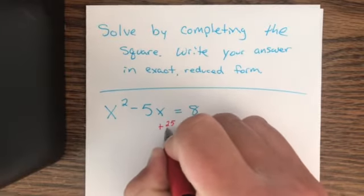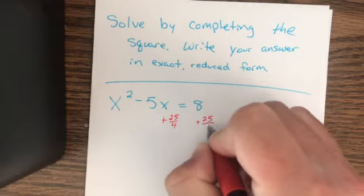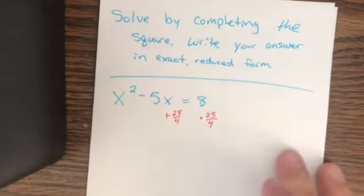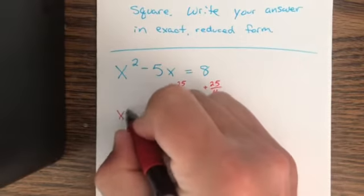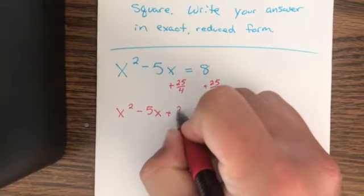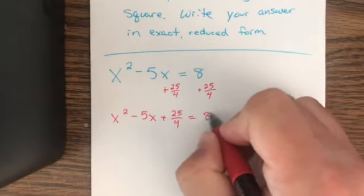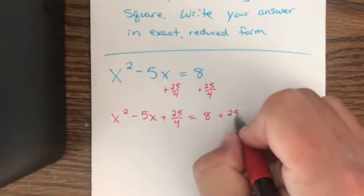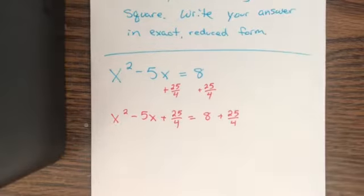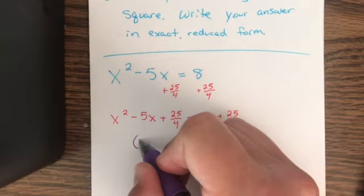We are just going to add 25/4 to both sides of our equation. Then we'll get x² - 5x + 25/4 equals 8 + 25/4. We are ready to factor the left side, which will factor as a perfect square.